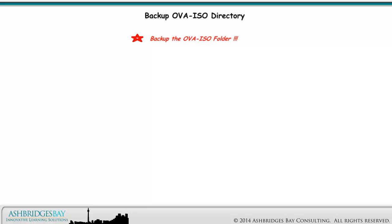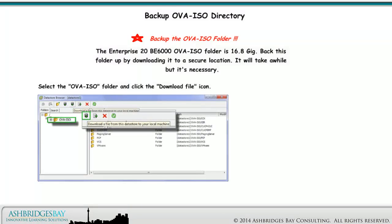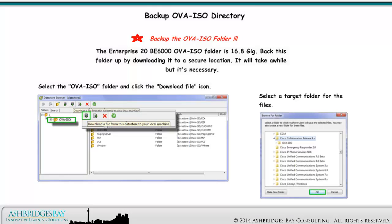Be sure to back up the OVA ISO folder. The Enterprise 20 VE6000 OVA ISO folder is 16.8GB. Back this folder up by downloading it to a secure location — it will take a while, but it's necessary. Select the OVA ISO folder and click the Download File icon, then select a target folder for the files. Remember, you'll need access to the OVA files when you install the applications.